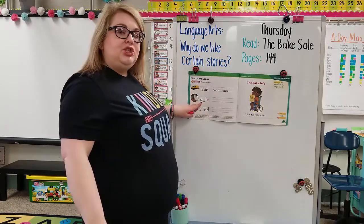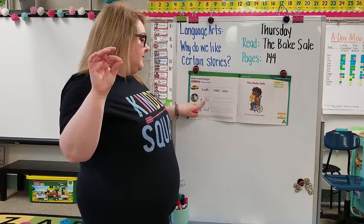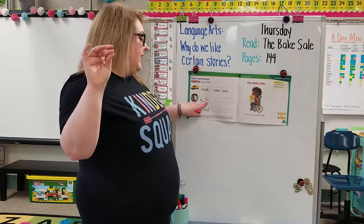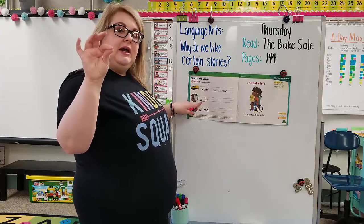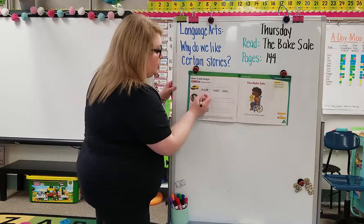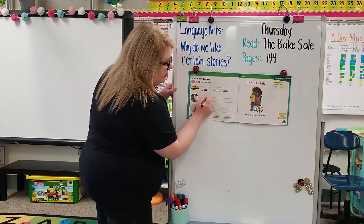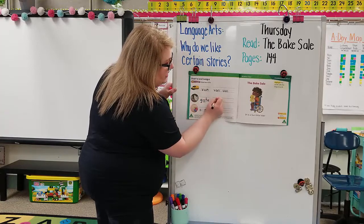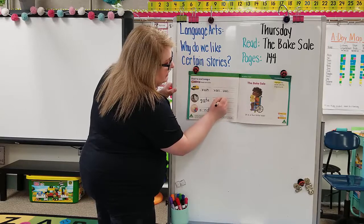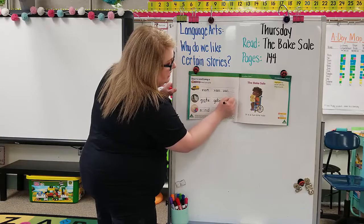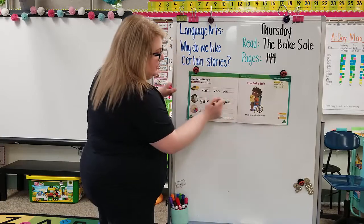Remember, when we have that magic E, we don't say the E, but we're going to make that A say its name — A instead of A. So let's sound it out. What does G say? G. What does the magic E make the A say? A. And what does T say? T. Ready? G-A-T — gate. So we have a gate here. Go ahead and trace the word: G-A-T-E. Go ahead and write it: G-A-T-E. One more time: G-A-T-E. Gate. Wonderful.